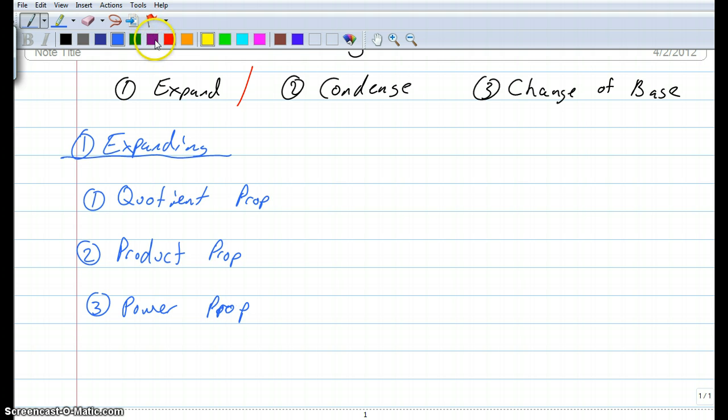Let's talk about quotient first. Quotient says, if you have log base B of U divided by V—Why U's and V's? Well, we already did A's and B's, so for properties we're going to use U and V. Log base B of U divided by V can actually be rewritten as log base B of U minus log base B of V.